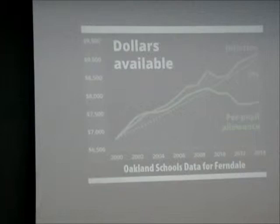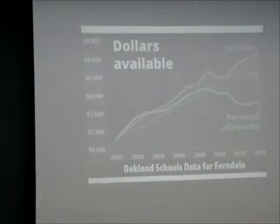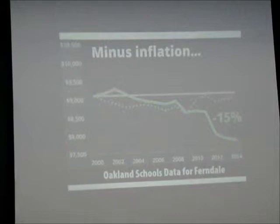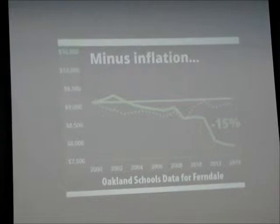What happens if we account for inflation? We make the gray line flat and look at money in terms of what you can actually buy. We did a little better than inflation in the early 2000s, but since then it has dropped — particularly a huge drop in the late 2000s and early teens.